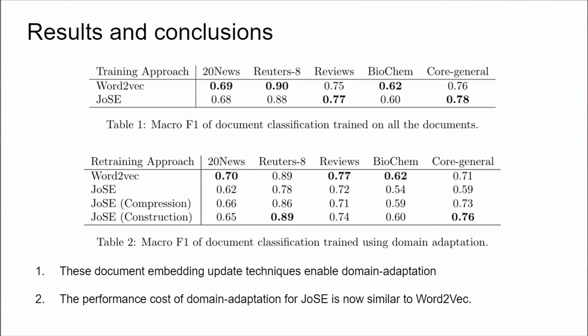Word2Vec maintains its performance using domain adaptation, dropping an average of less than 1%, whereas the JOSE performance collapses with an average drop of 12%. Using our update strategies, this performance drop is considerably diminished, with the construction approach seeing a drop of only 2%, similar to the Word2Vec model. These competitive results unlock the JOSE model for domain adaptation applications.